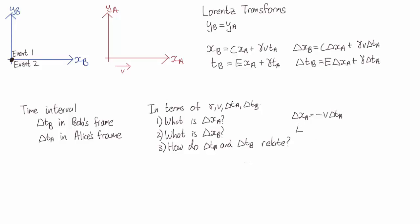Now in Bob's frame, both of these events happen at the same place, the origin. So delta xb equals 0.